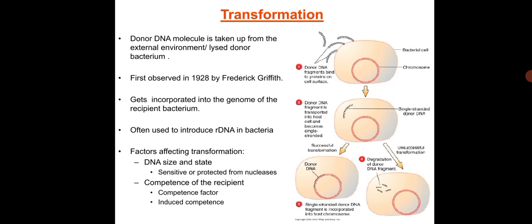Transformation in bacteria was first observed in 1928 by Frederick Griffith. It is the process in which a donor DNA molecule is taken up from the external environment or from a lysed donor bacterium. The DNA, after entering, gets incorporated into the genome of the recipient bacterium.